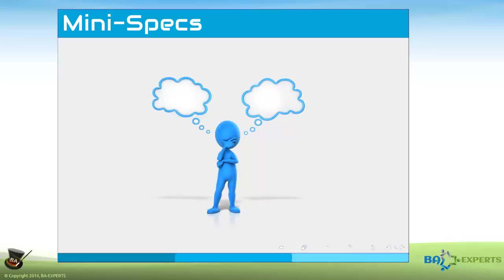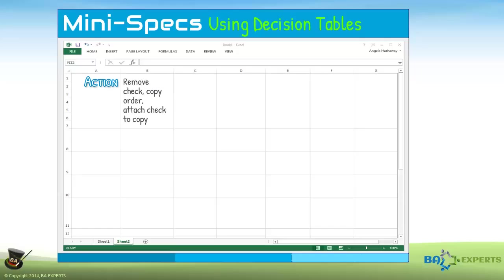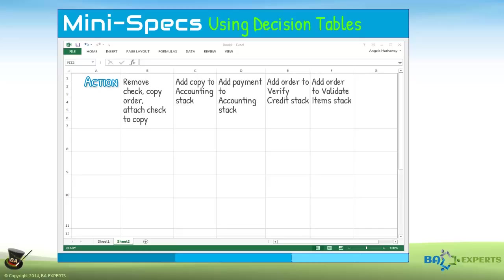If the process is primarily a decision-making process and your target audience is comfortable with them, you can also use decision tables, also called truth tables. To create a decision table, open a spreadsheet and write down each potential action as a column header starting with the second column. Our column headers in this example will be: column two — remove check, copy order, attach check to copy; column three — add copy to accounting stack; column four — add payment to accounting stack; column five — add order to verify credit stack; column six — add order to validate item stack.